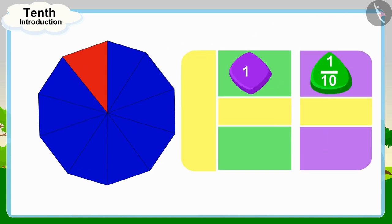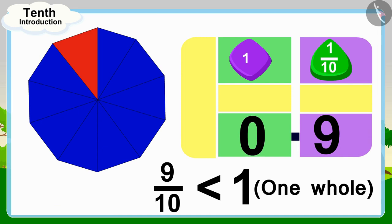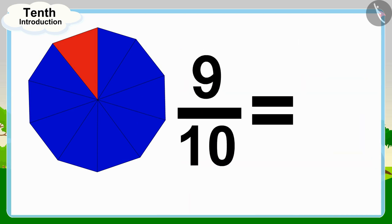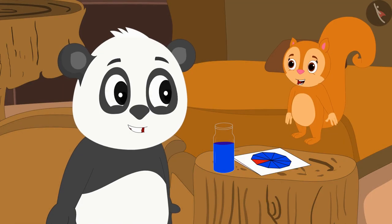We will first write the decimal point in this way. Now Golu has colored nine parts of this whole, therefore we will write the number nine after the decimal point. And because nine tenth is less than one whole, we will write zero in the units place before the decimal point. In this way, Golu has filled blue color in nine tenth or 0.9 parts of the flower.